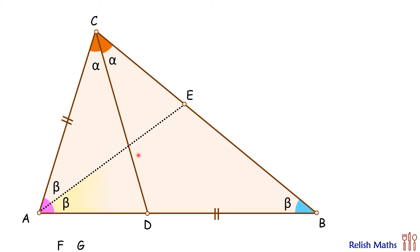Thus, in triangle AEB, these angles are beta, beta. So opposite sides will also be equal. So we can say EA equals EB.